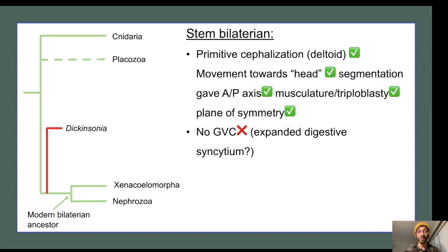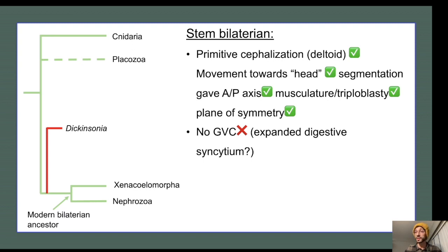In this hypothesis, Dickinsonia's deltoid zone was a primitive head with delicate sensory organs that were lost in preservation — explaining why it moved consistently towards its deltoid region, sensing its way across algal mats towards greener pastures. Glide segmentation would represent an early, failed way of elongating the body along the anterior-posterior axis, and its musculature would suggest that triploblasty evolved very early in bilaterian divergence. The key issue is Dickinsonia's lack of a GVC and its external digestion, though it's possible its ancestor developed an expanded digestive syncytium, gaining external digestion to exploit the vast algal plains of the Ediacaran and increase body size to maximize contact with its food source.